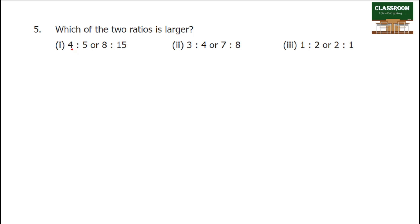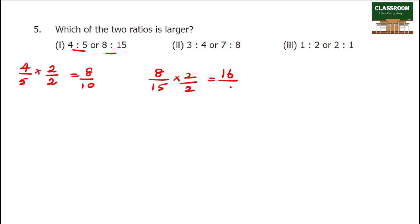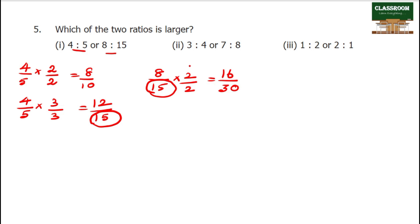Which of the 2 ratios is larger? For 4 by 5: find common denominator. Multiply by 2 — 4 twos are 8, 5 twos are 10, giving 8 by 10. Multiply 8 by 3 by 3: 4 threes are 12, 5 threes are 15, giving 12 by 15. Comparing 12 by 15 and 8 by 15 — 12 by 15 is greater, so 4 is to 5 is the larger ratio.